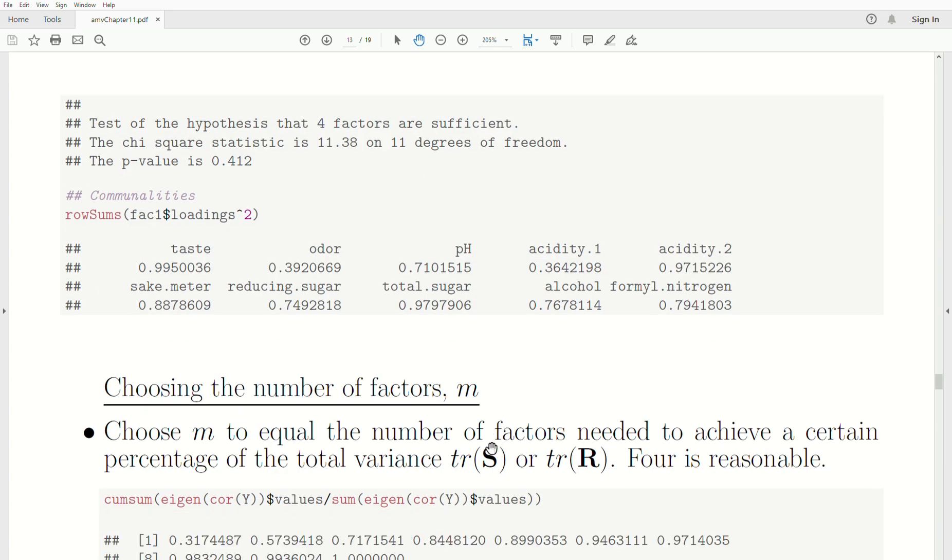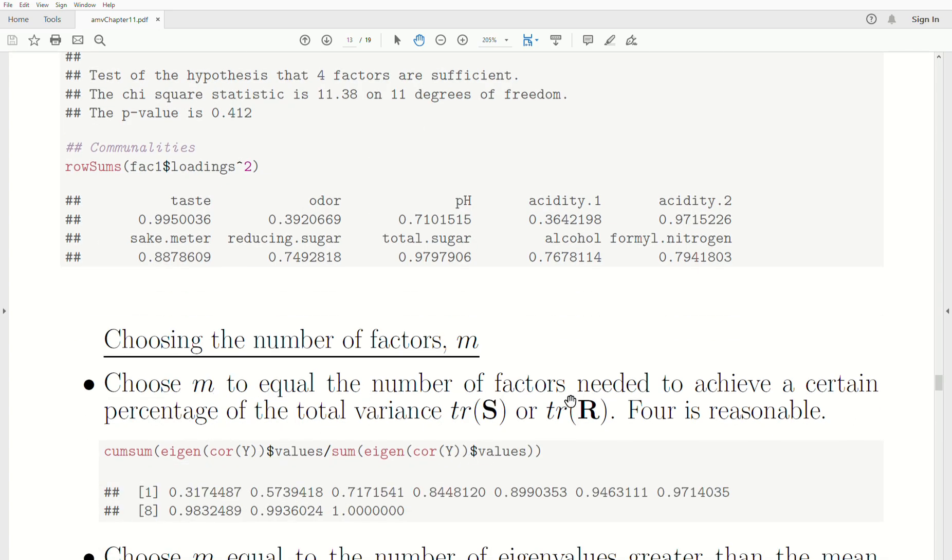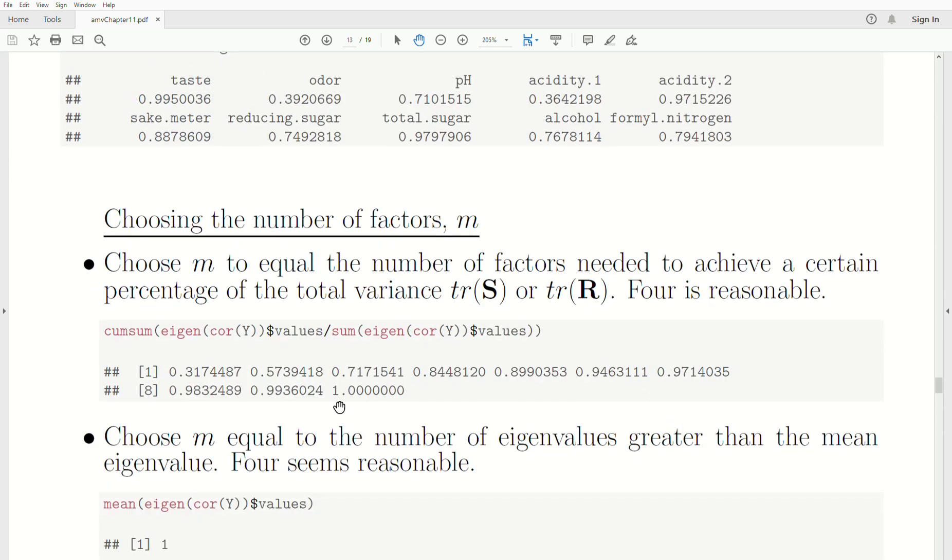One is choose M to equal the number of factors needed to achieve a certain percentage of the total variance of S or R. In this example, four seems reasonable. We use the four-factor model in the example. If we look at the cumulative of the total variance or the variance accounted for by factors, after four we get 84% of the total variance. So that's why we use four.